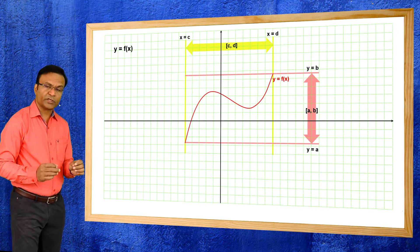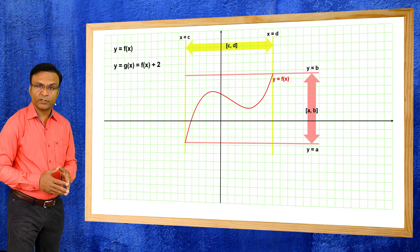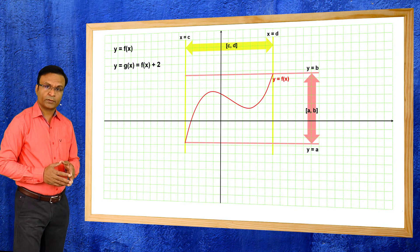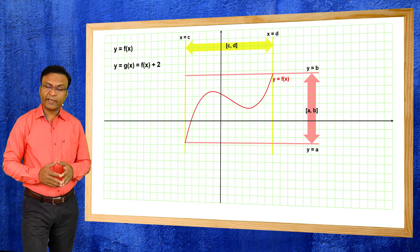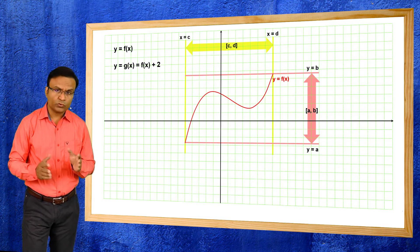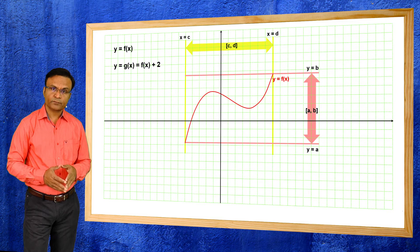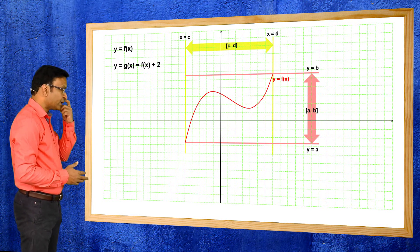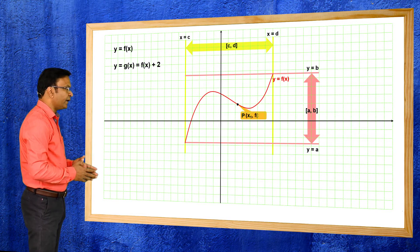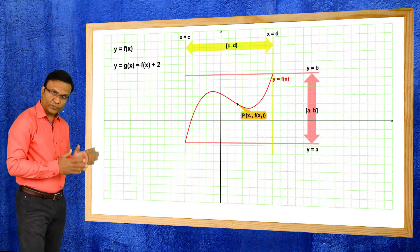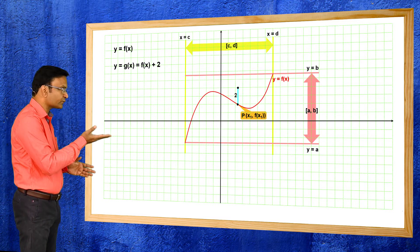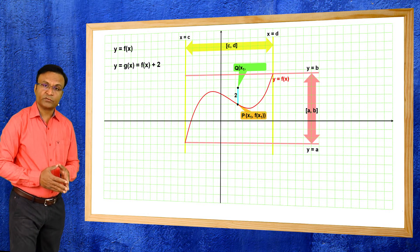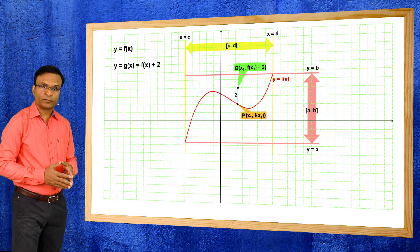Now consider a function y = g(x) = f(x) + 2. We want to draw the graph of this function. Clearly, for any value of x, the value of g(x) is 2 more than the value of f(x). Consider point p on this graph. From this point, move two units upward to get point q. The coordinates of this point are (x1, f(x1) + 2) because we moved two units upward.